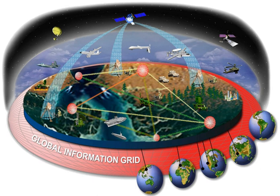The Global Information Grid is an all-encompassing communications project of the United States Department of Defense. It is defined as a globally interconnected, end-to-end set of information capabilities for collecting, processing, storing, disseminating, and managing information on demand to warfighters, policy makers, and support personnel.